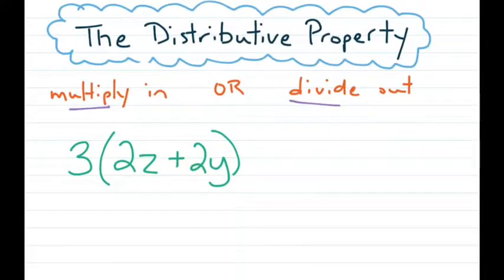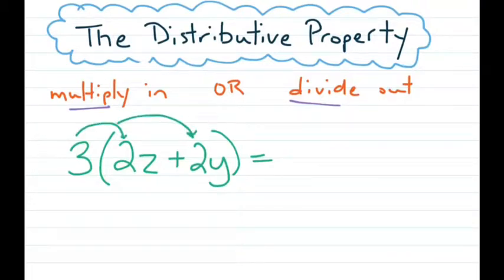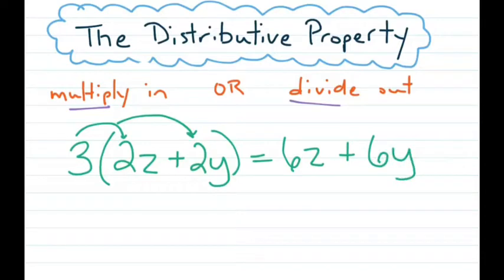The distributive property also appears a lot with algebraic expressions that contain variables. Let's distribute the 3 into the parentheses using multiplication on the expression 3(2z + 2y). We can only multiply the 3 times the coefficients — the numbers in front of the variables — because we don't know what the variables equal. So 3 times 2z gives me 6z, and 3 times 2y gives me 6y. So 3(2z + 2y) is equivalent to 6z + 6y.